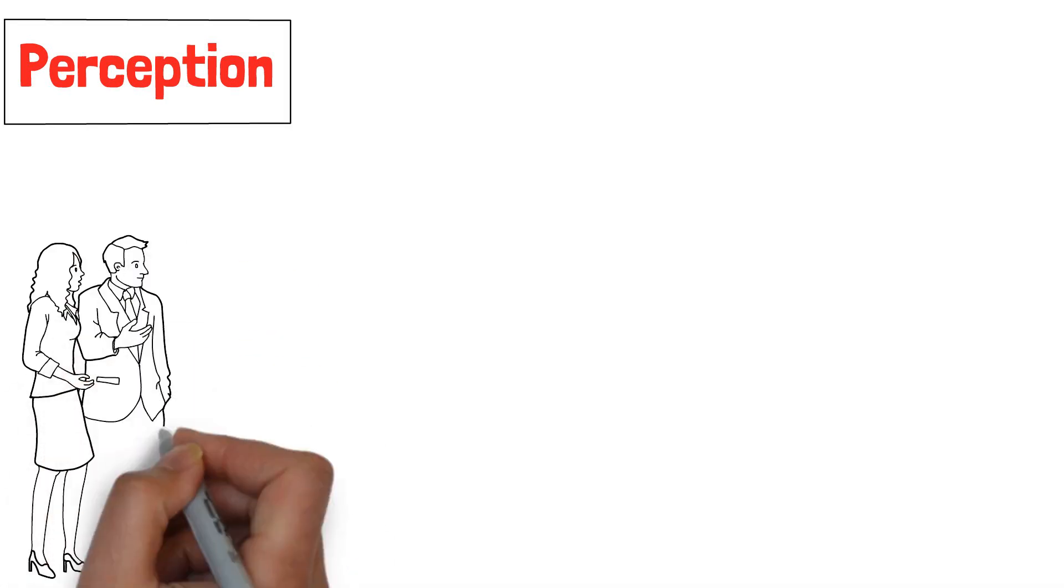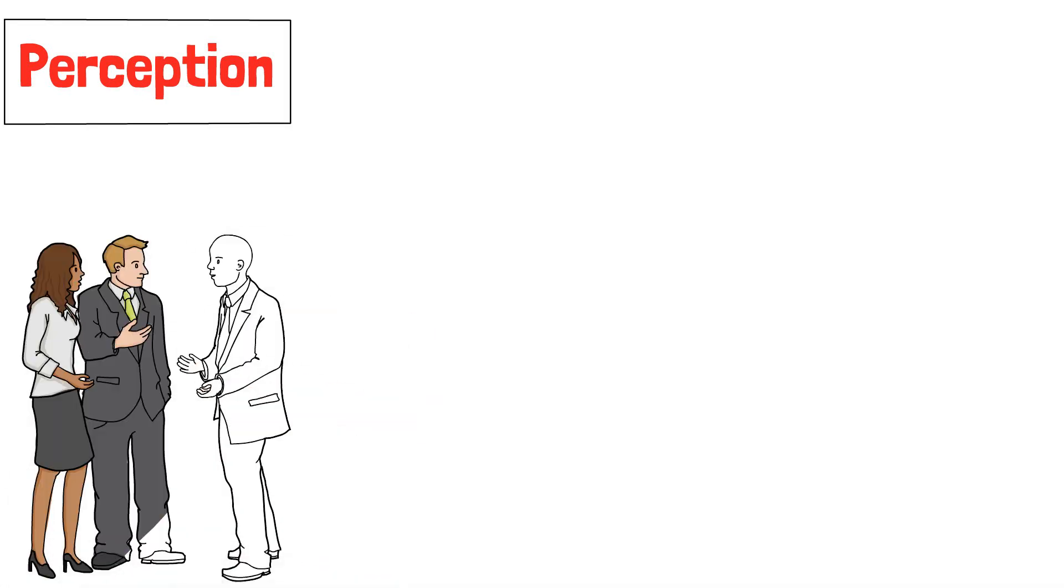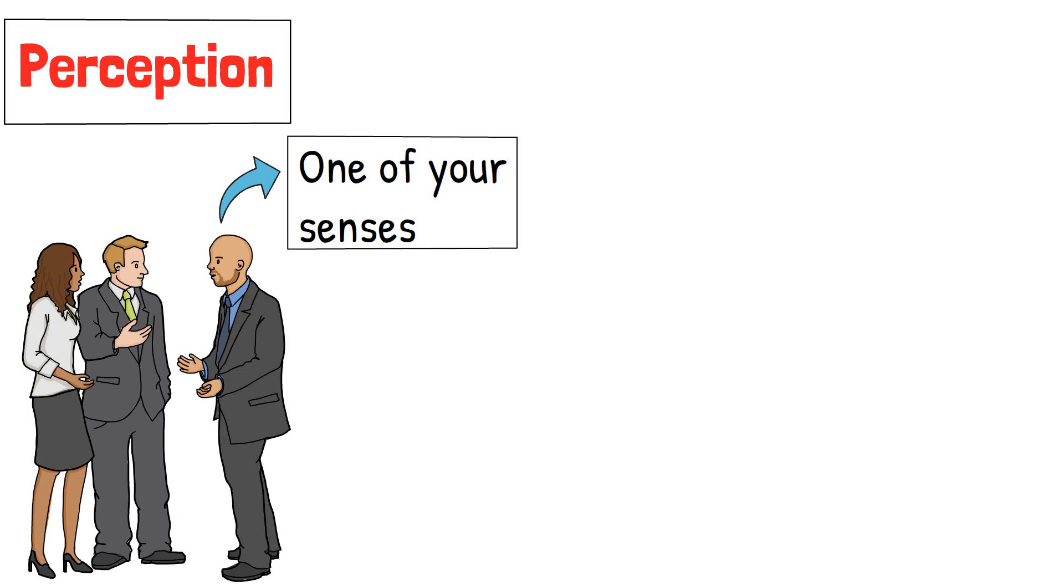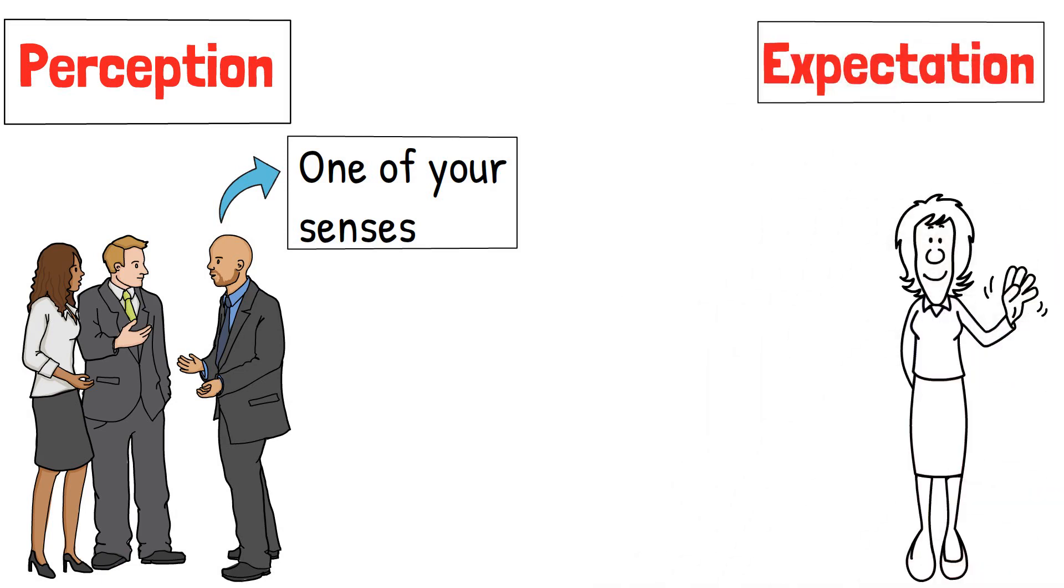Perception: The ability to understand someone or something easily using one of your senses. Expectation: An expectation is a belief about what will happen in the future.